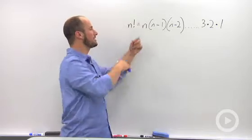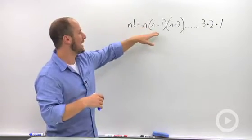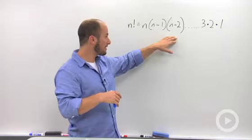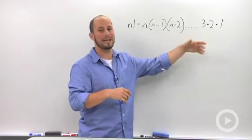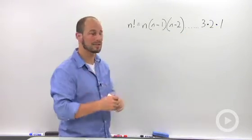n factorial is just that number times the number one less than that, times the number one less than that, and so on and so forth, all the way down to the number one. Let's take a look at an example.